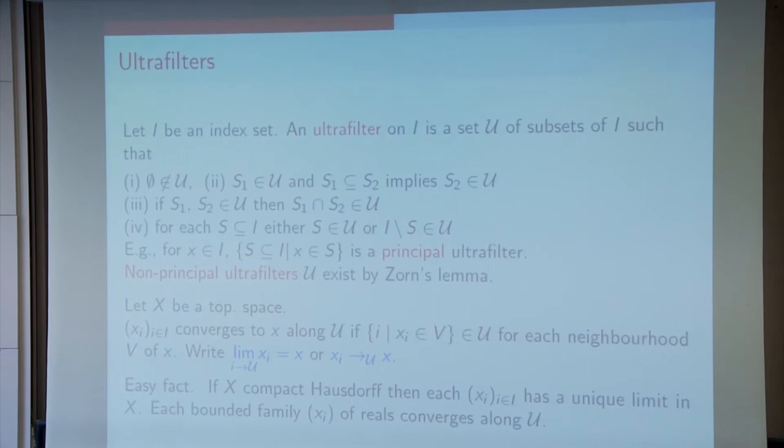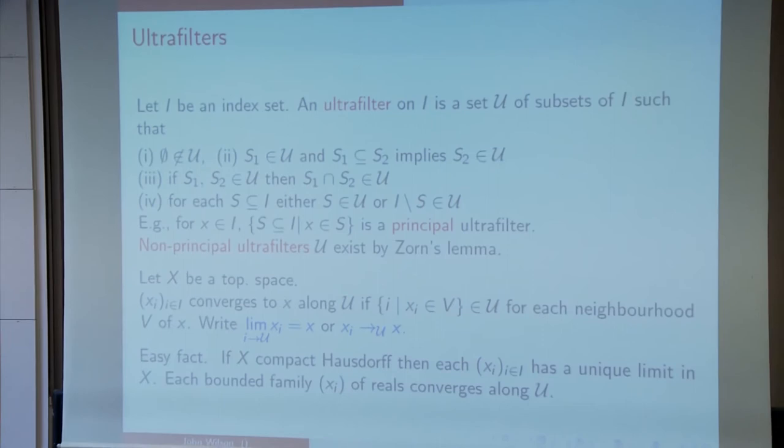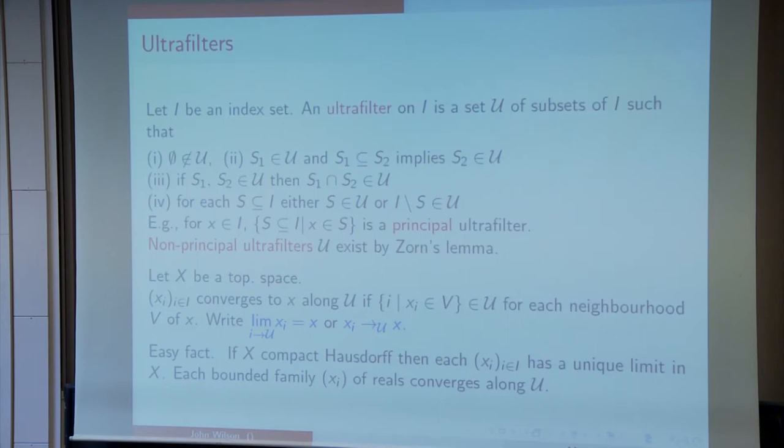Now take a topological space. We say that a sequence, let's call it a sequence rather than family, converges to X, some point X along U, if every neighborhood of the point X, the family of indices for which the terms of the sequence belong to it, lie in the ultrafilter. Let me call a set in the ultrafilter large, just for simplicity. So the Xi's in each neighborhood form a large set, and I've written there my notation for the limit.